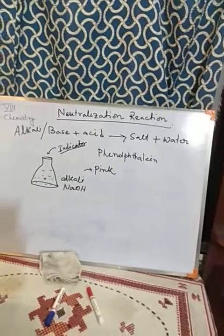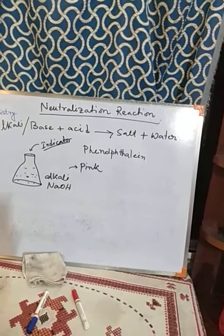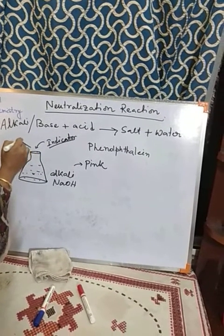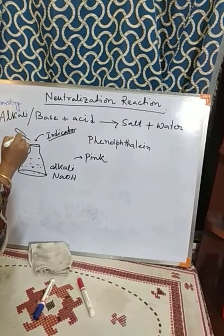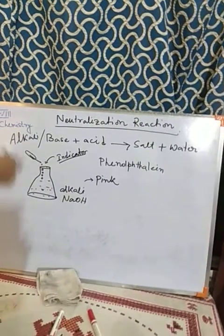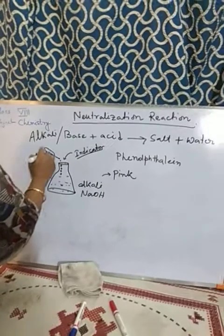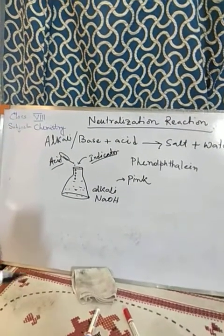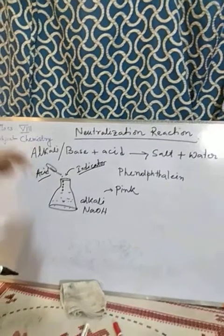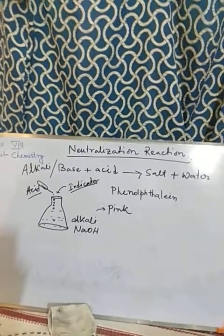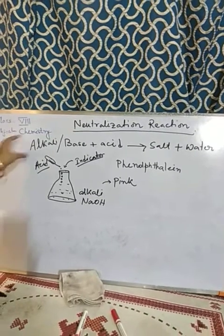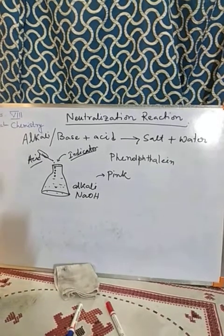Now into this alkaline solution mixed with indicator, we will add acid drop by drop using a dropper. As we slowly add the acid, the pink color will begin to fade. Each time we add a drop, we shake it properly, and we keep adding acid drop by drop.